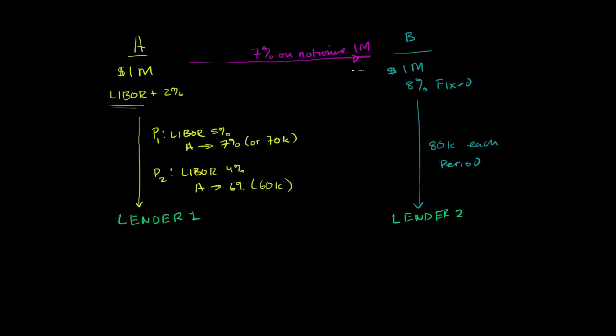And in return, Company B agrees to pay A a variable rate. Let's say it's LIBOR plus 1% right over here. And this little agreement, they would agree to do this for some amount, and once again, this is LIBOR plus 1% on a notional $1 million.